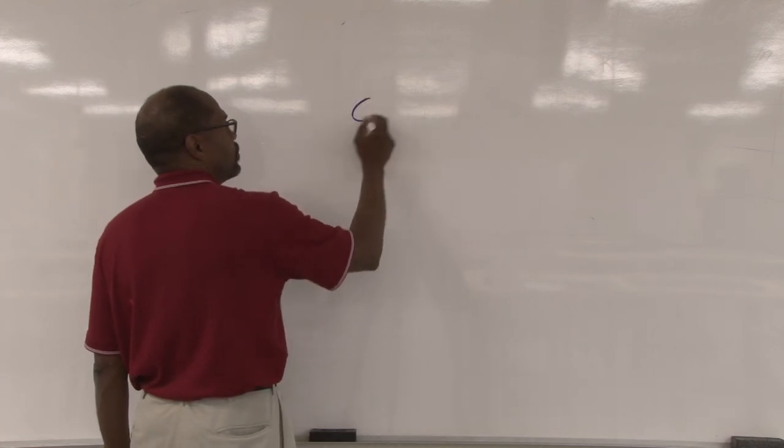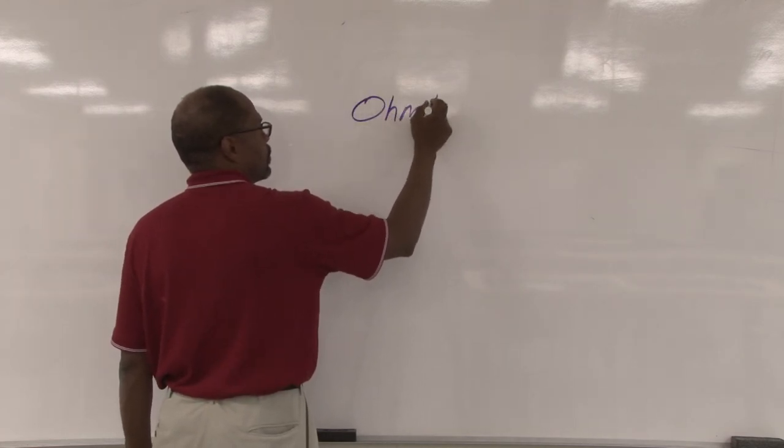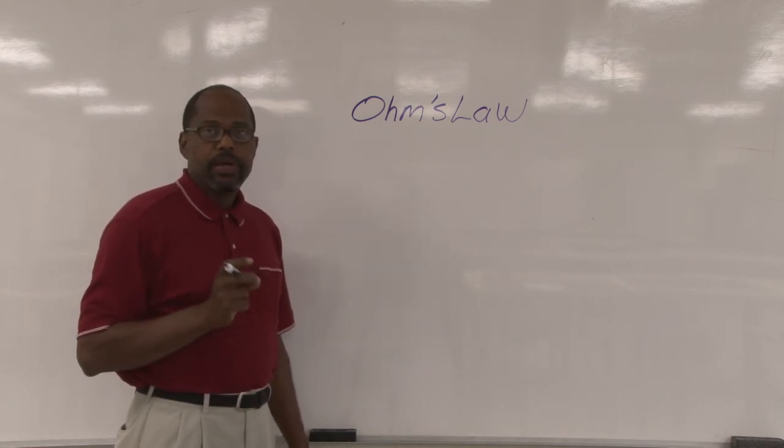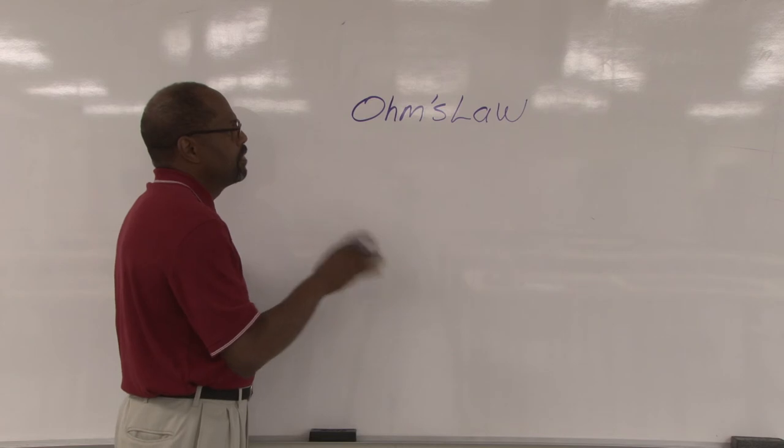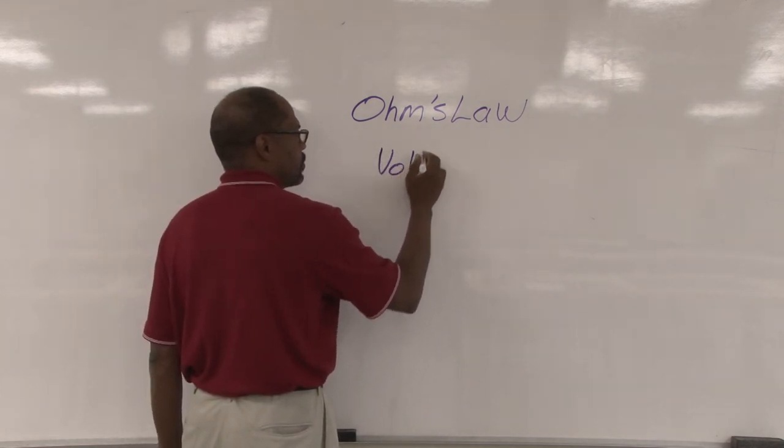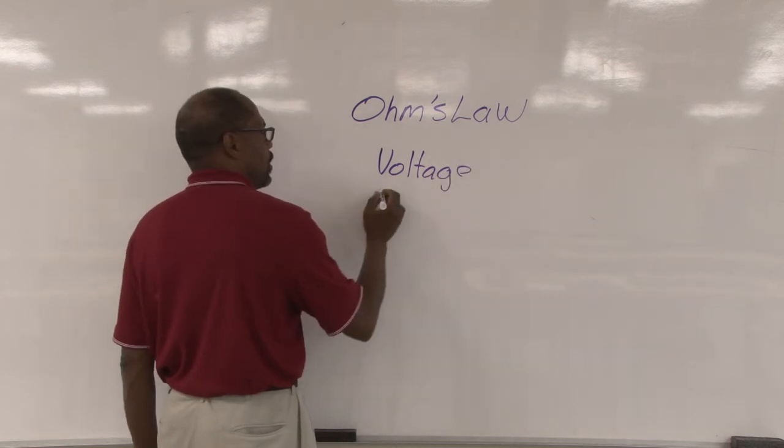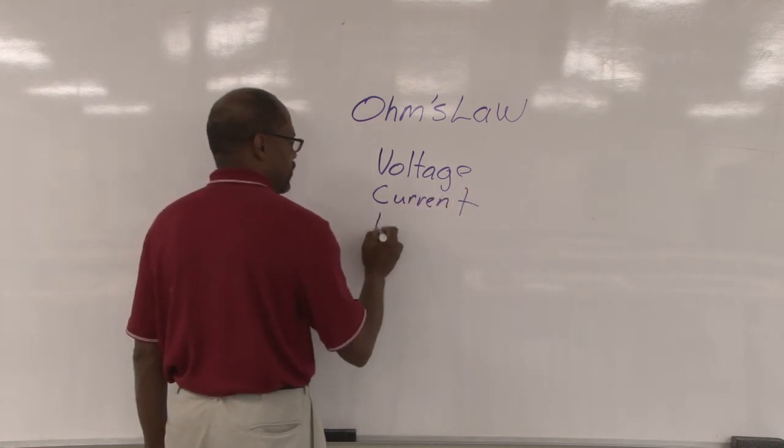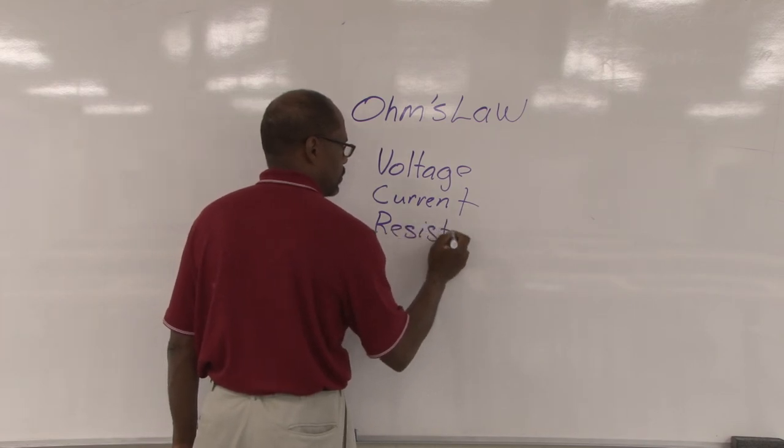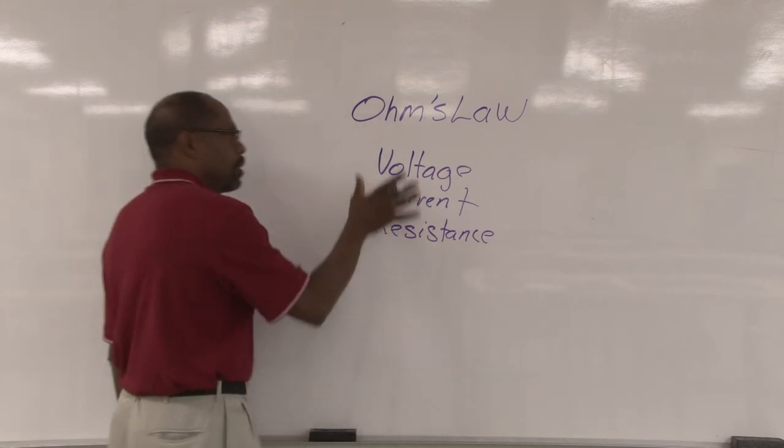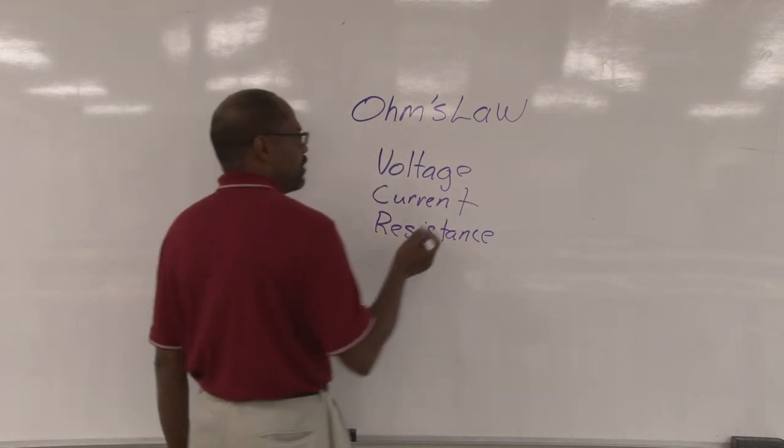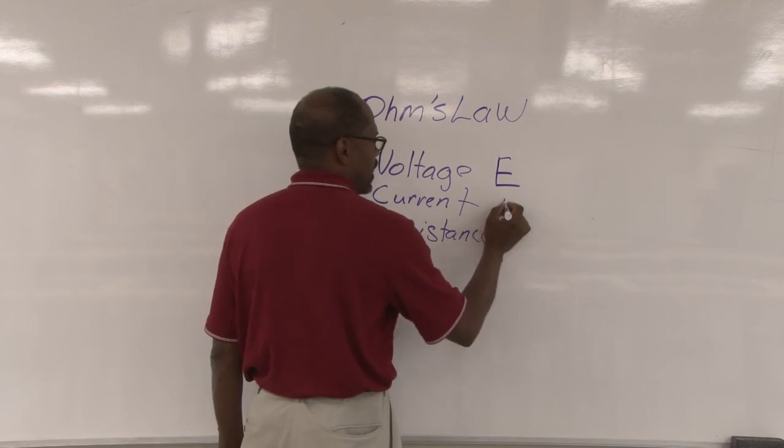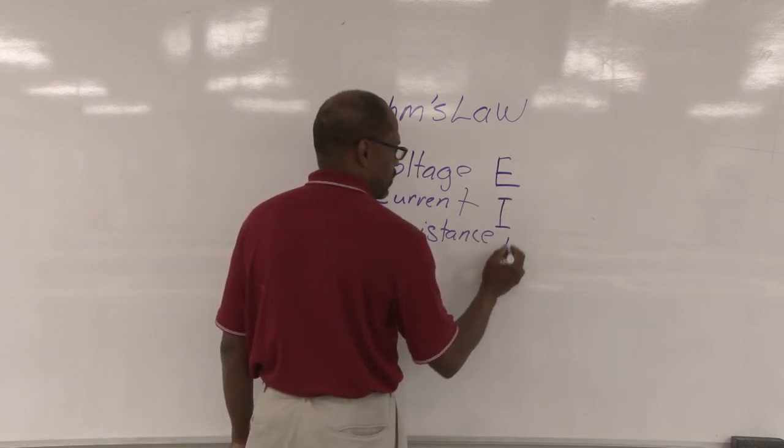Ohm's Law is the relationship between voltage, current, and resistance. The relationship between these three in Ohm's Law is stated differently: voltage is stated as E, current is stated as I, and resistance is stated as R.